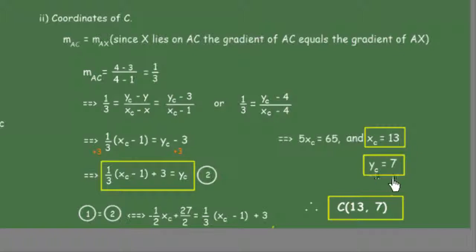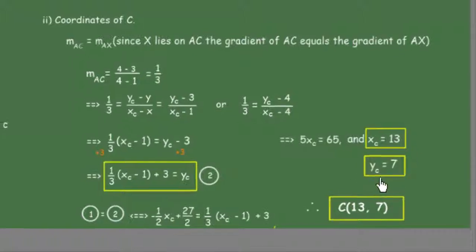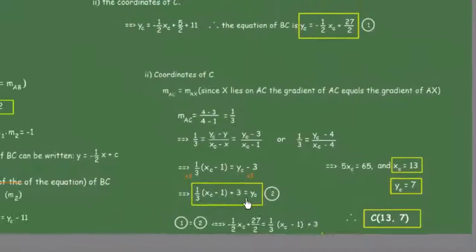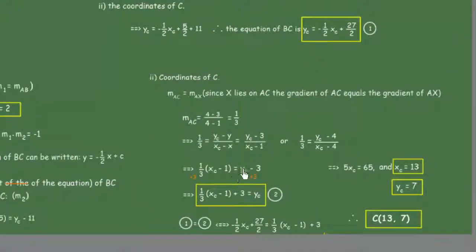We replace x_C in either equation and get y_C = 7. Therefore, the coordinate of point C is (13, 7).